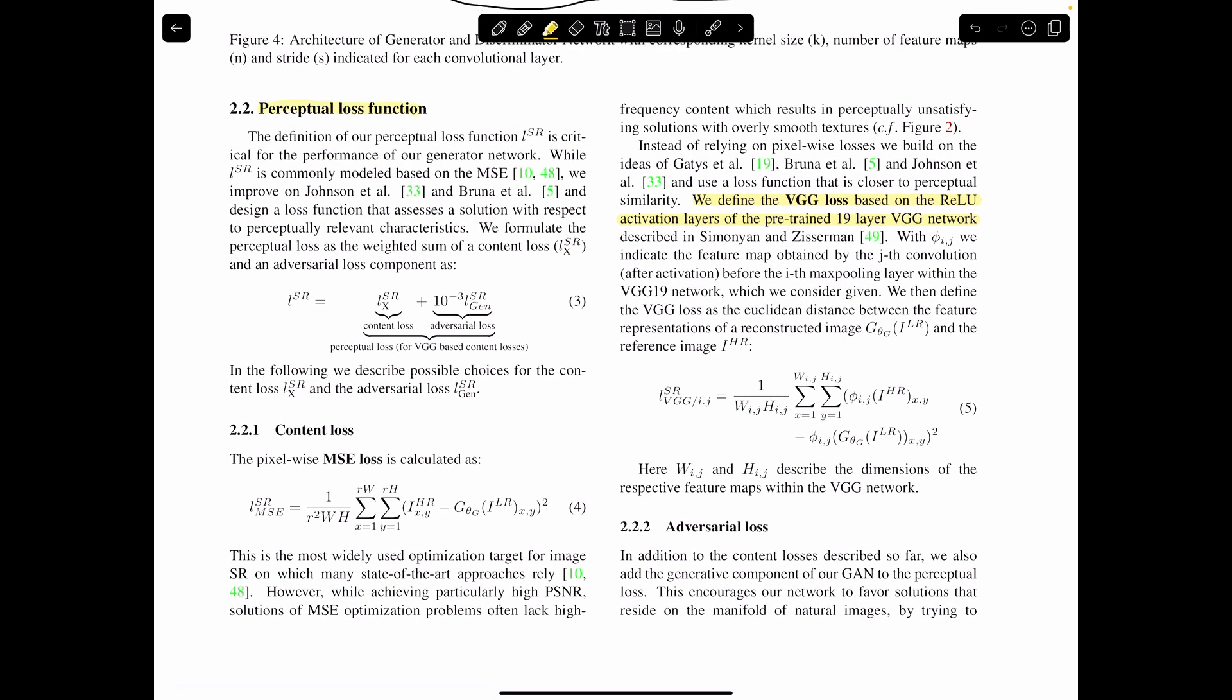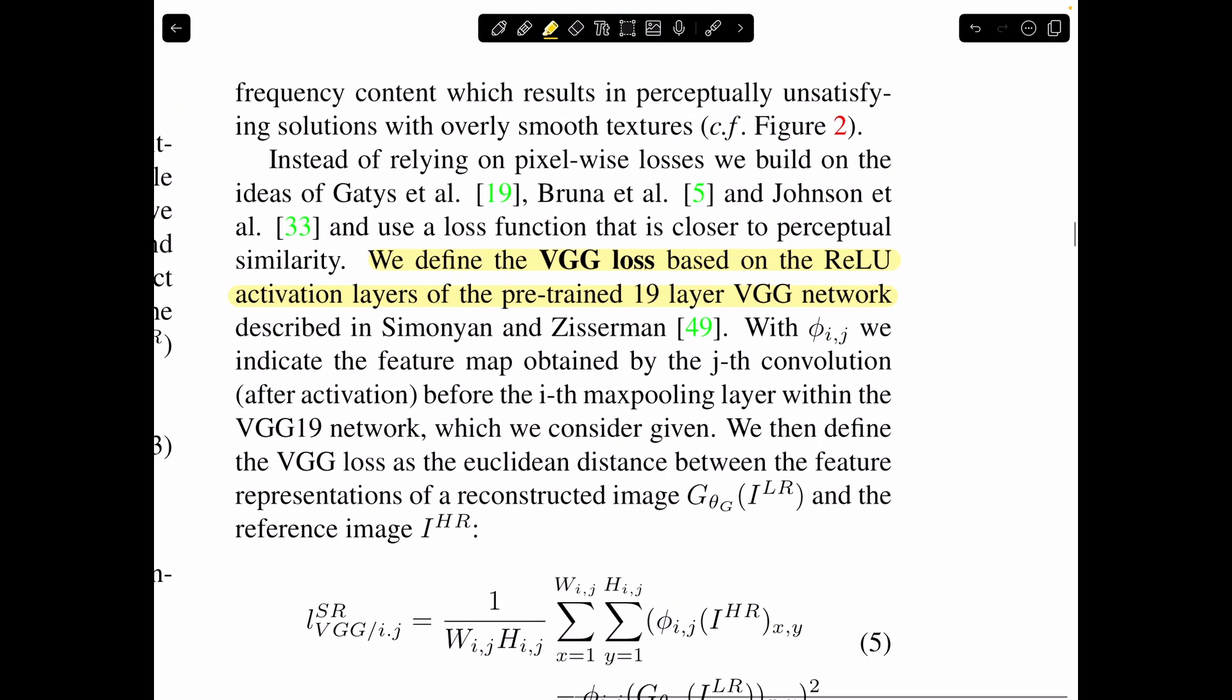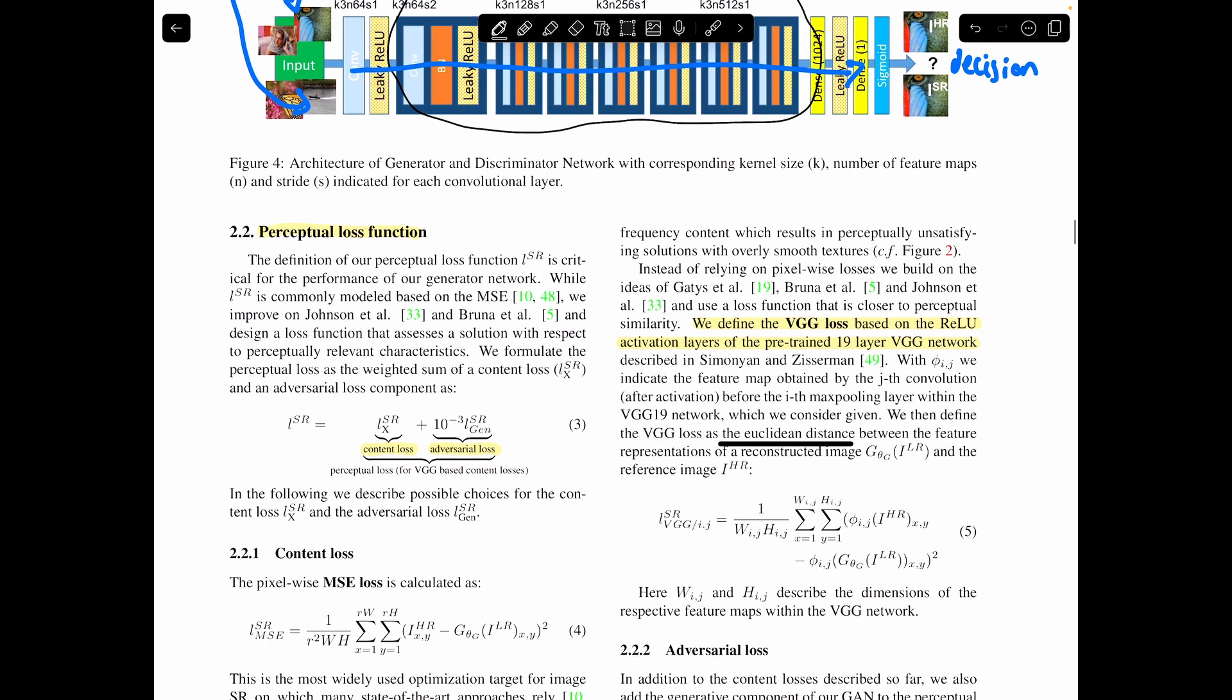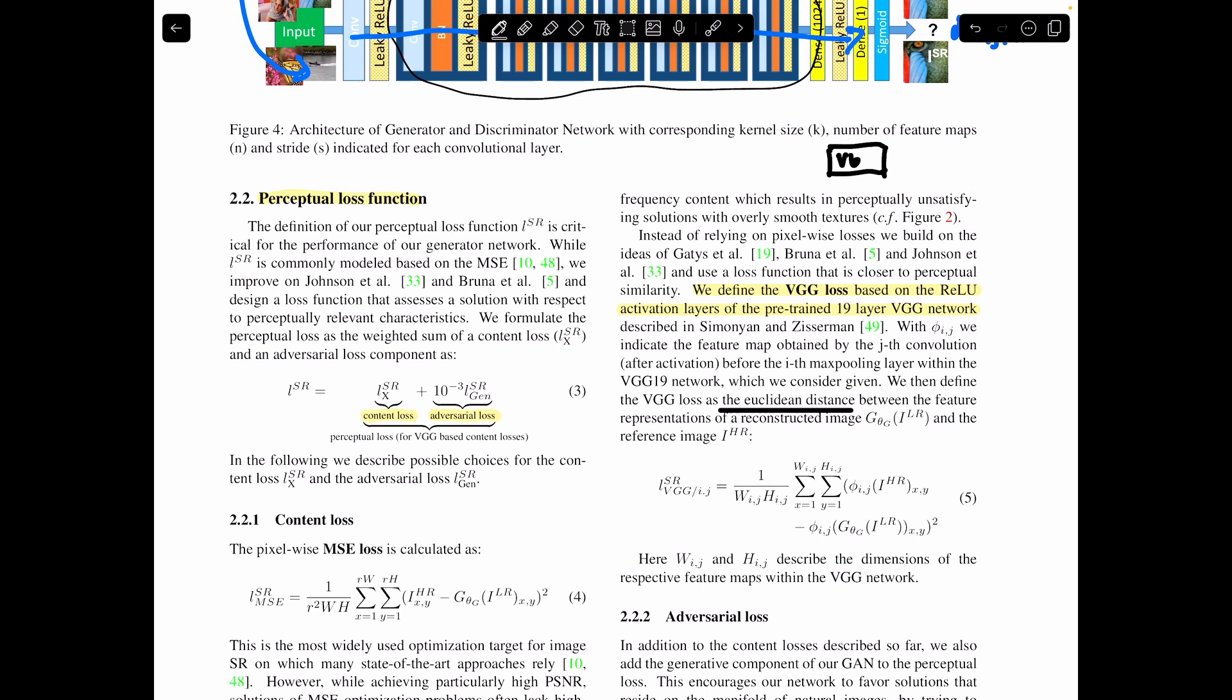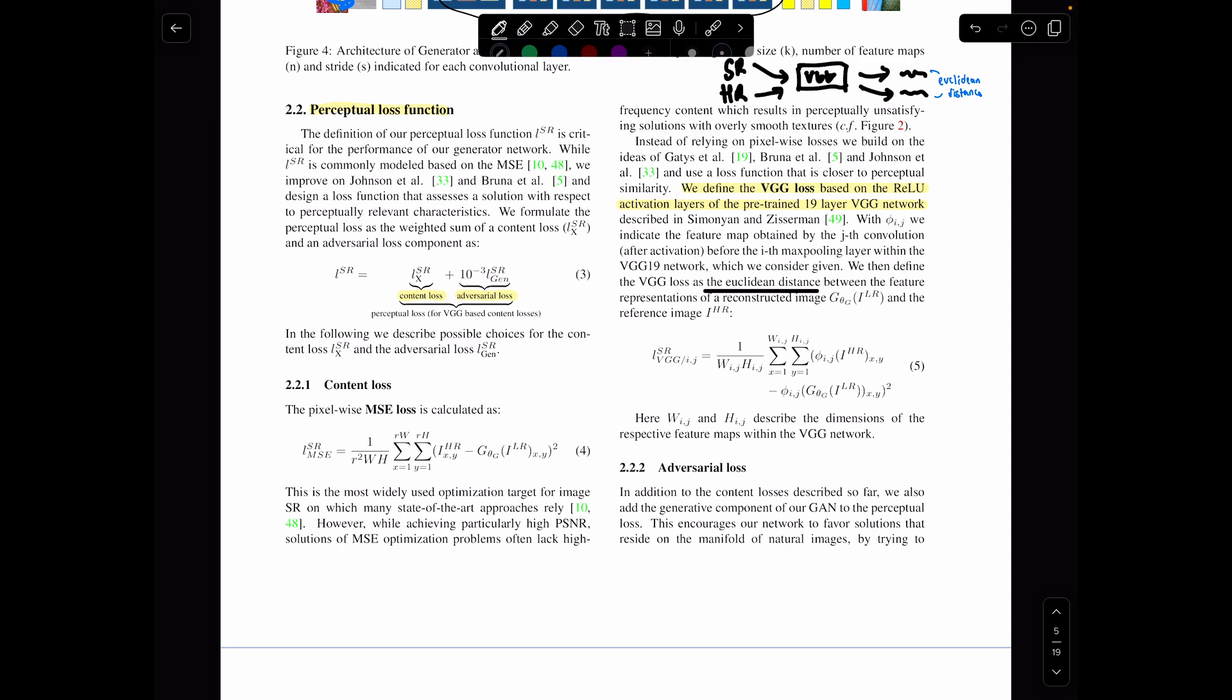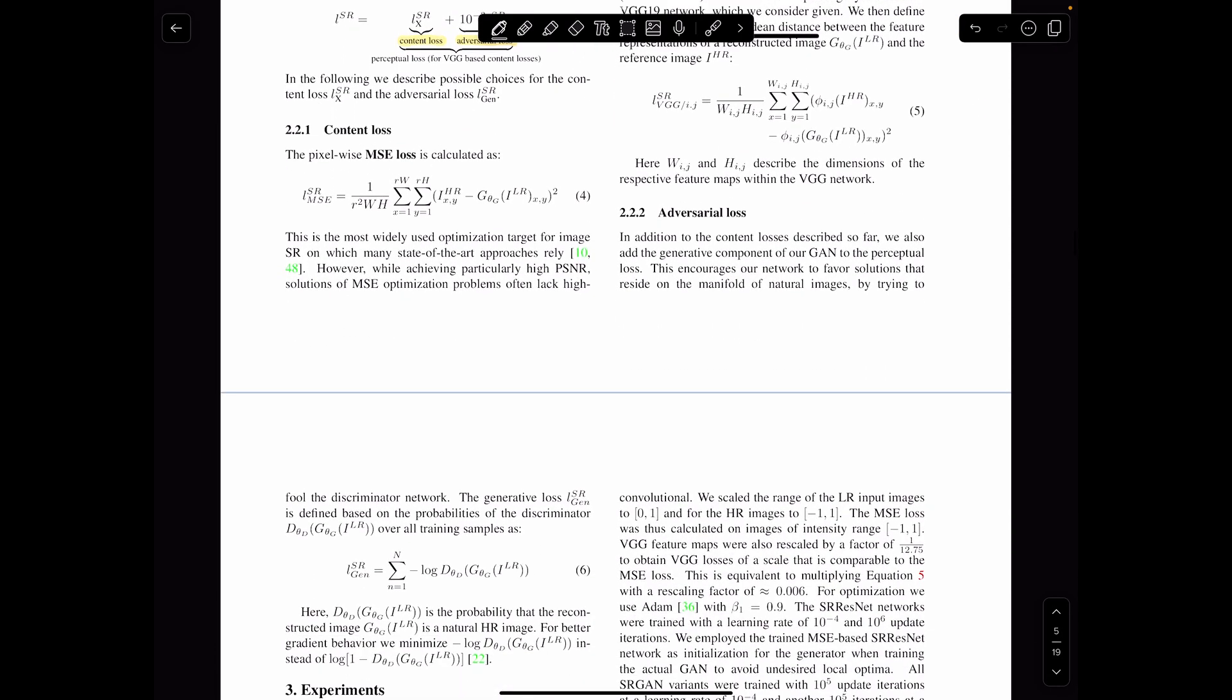So now we're going to talk about the perceptual loss. So they defined their loss function as a content loss plus a weighted sum of a content loss and an adversarial loss. So the content loss, instead of using mean squared error, is they're going to take a VGG network and then after the activation of a specific layer, they're going to take that and then they're going to compute the difference, that Euclidean distance. So if you have this network, VGG, they're going to pass the super resolved image through it and then they're going to pass the high resolution image through it. And then they're going to take these two and calculate the Euclidean distance between these two. Then the adversarial loss is just the GAN loss.